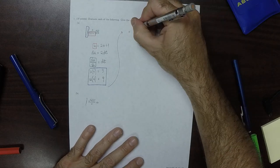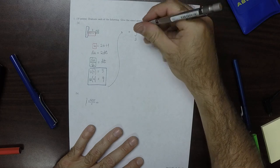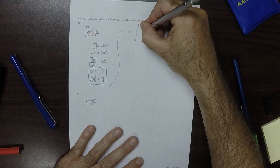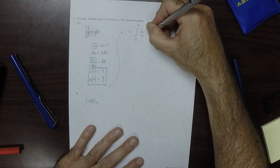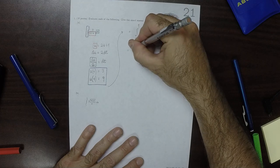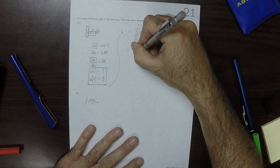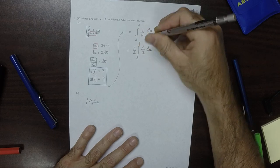So the new integral is the integral from 3 to 9 of 3 over u du over 2. Well, that's 3 halves integral 3 to 9, 1 over u du.